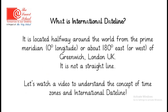What is international date line? International date line is located halfway around the world from the prime meridian, zero degree longitude or about 180 degrees east or west of Greenwich, London, UK. It is not a straight line. Now let's watch a video to understand the concept of time zone and international date line.